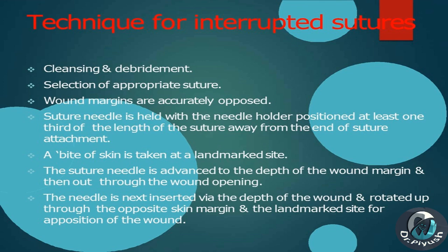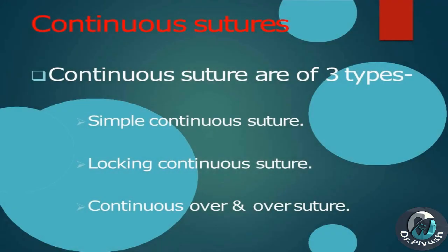Technique for interrupted sutures: cleansing and debridement, selection of appropriate suture, wound margins are accurately opposed. The needle holder is positioned at least one-third of the length of the suture away from the end of suture attachment. A bite of skin is taken at a landmark site. The suture needle is advanced to the depth of the wound margin and out through the wound opening. The needle is next inserted via the depth of the wound and rotated up through the opposite skin margin at the landmark site for apposition.